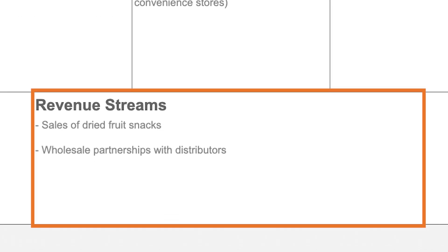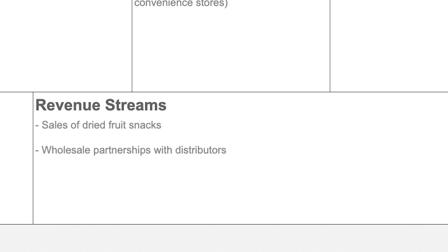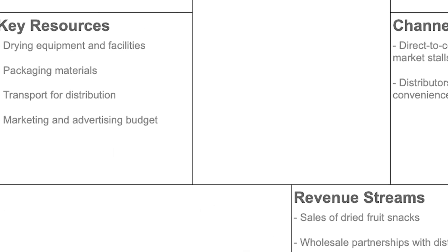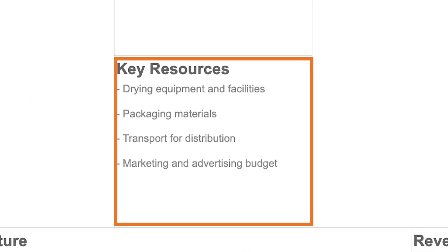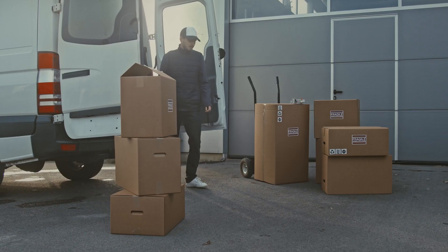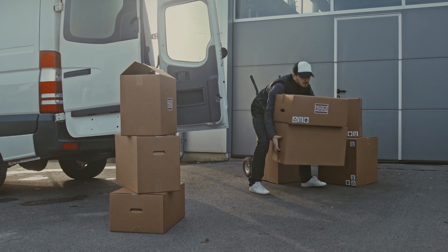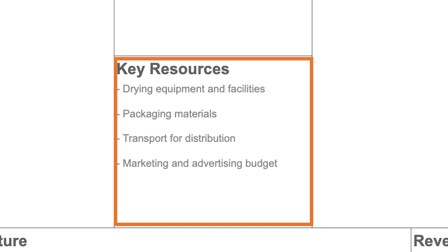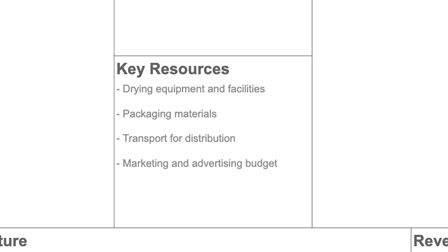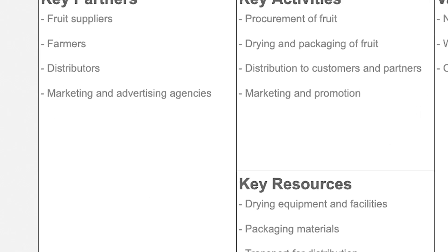Tropical Treats makes money through the sale of their dried fruit snacks and through wholesale partnerships with distributors who buy in bulk and resell. Their key resources include drying equipment and facilities, transportation to deliver products to distributors, and an advertising and marketing budget, since this is a consumer product that requires significant marketing to penetrate the market.